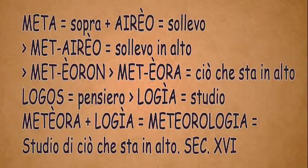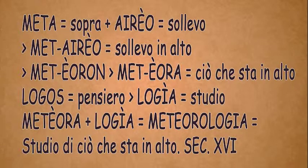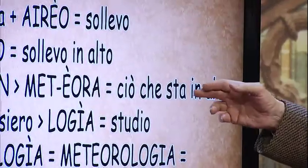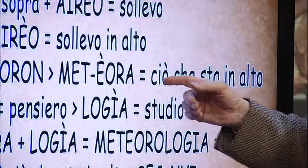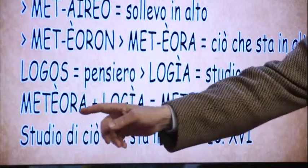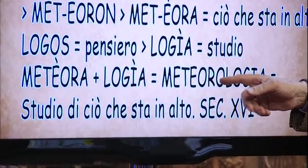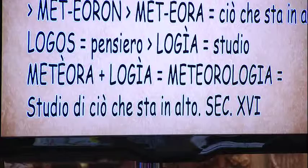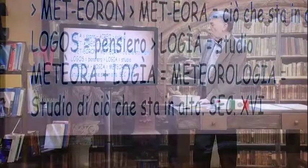Siccome dobbiamo ficcarcelo in testa che si deve dire meteorologiche e non meteorologiche, analizziamo questa parola e vediamo come nasce. Meta in greco significa sopra; aireo in greco significa io sollevo; quindi metaireo significa sollevo in alto. Meteoron è il participio presente, e meteora è ciò che sta in alto. Poi abbiamo logos che significa pensiero, e logia che significa studio. Meteora più logia: meteorologia, lo studio di ciò che sta in alto, presente nella lingua italiana.